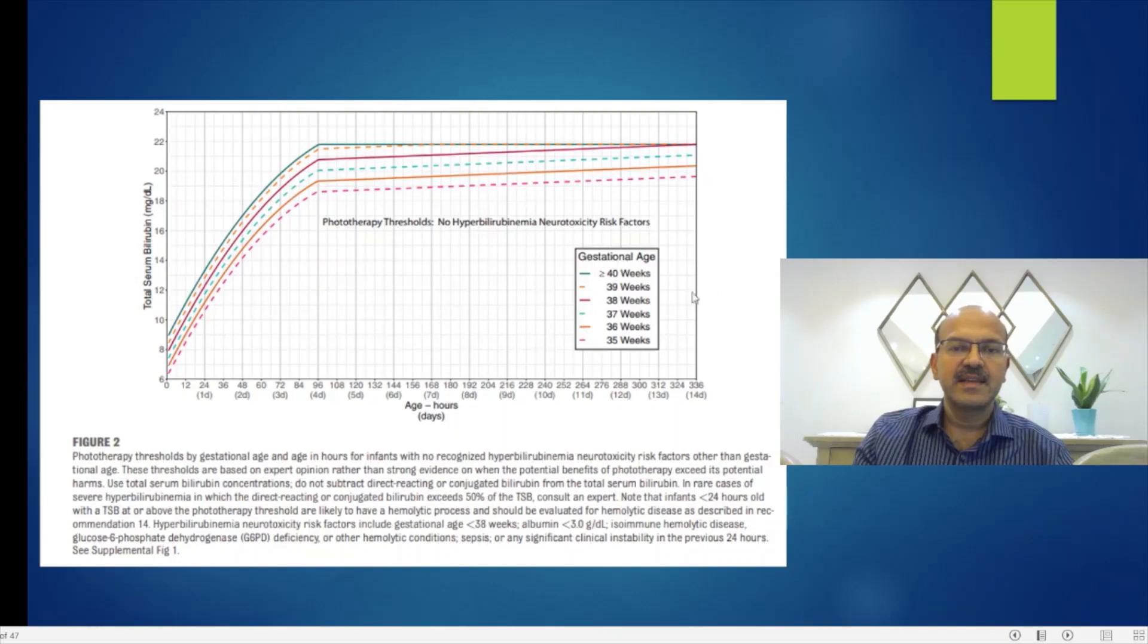In this aspect, it is better than the NICE guidelines because the NICE guidelines club all the babies above 38 weeks in one go, and so it ends up over-treating or under-treating some of the 38, 39-week babies. This is a very positive change for two reasons as I mentioned. You are clearly differentiating the neurotoxicity risk factors by using a totally different chart.